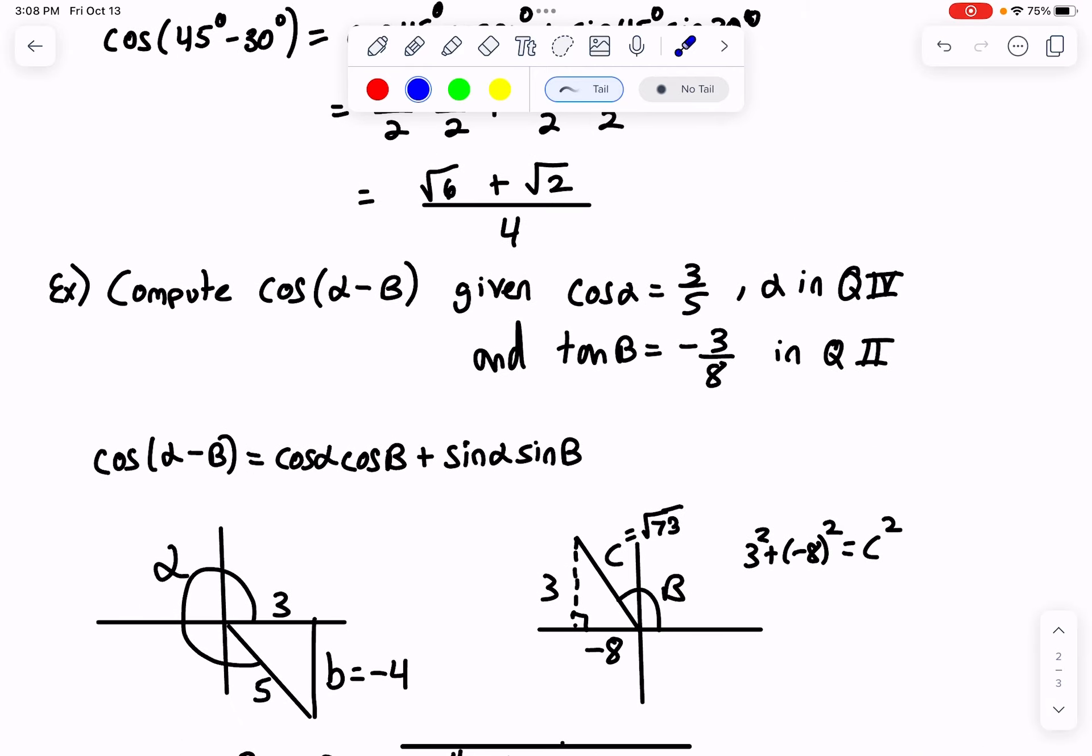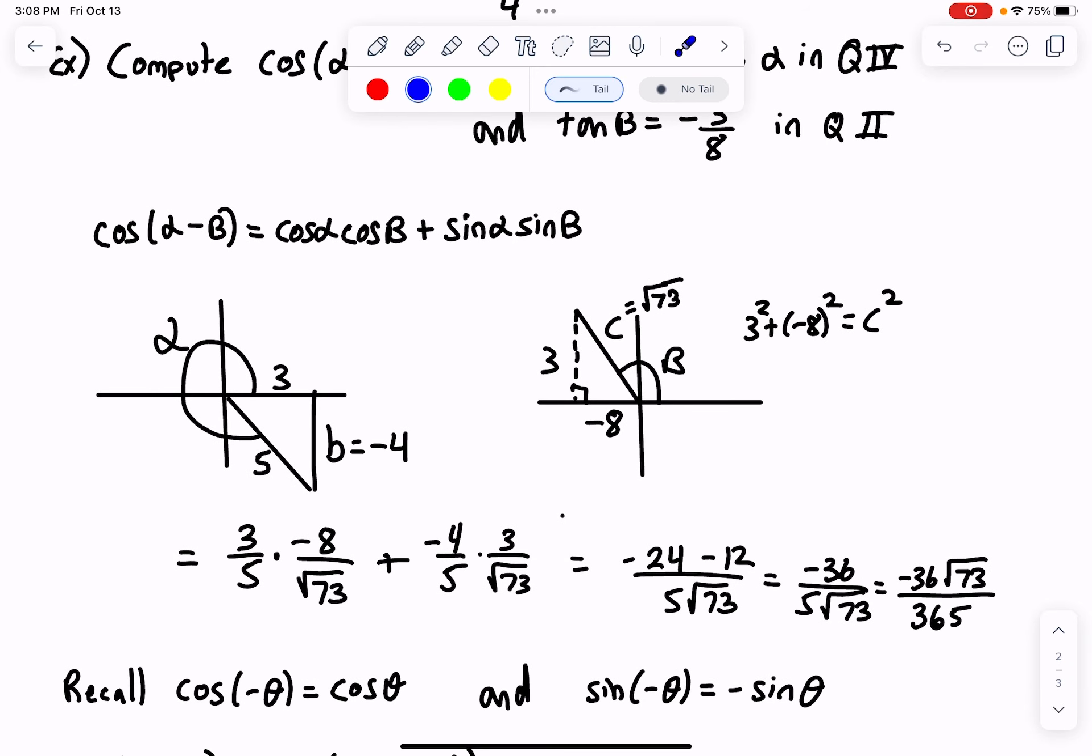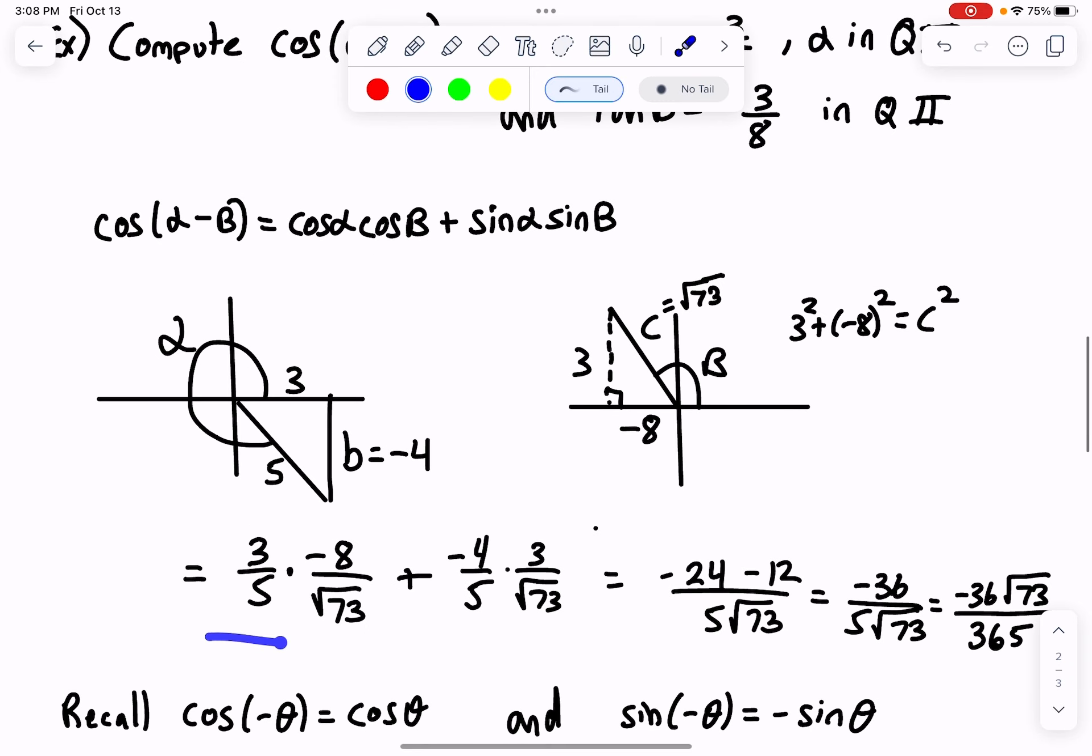Now that we have the pictures for alpha and beta, we're ready to use those diagrams to compute everything. Cosine of alpha is adjacent over hypotenuse, so three-fifths. Cosine of beta is adjacent over hypotenuse, so minus eight over square root of 73. Plus, from the formula,